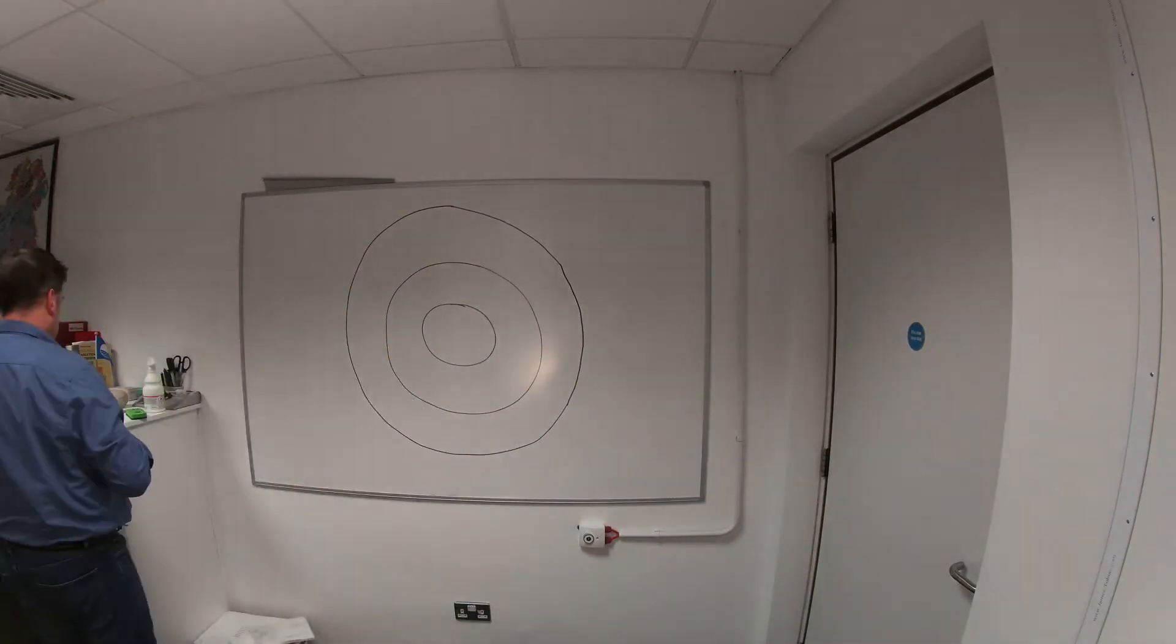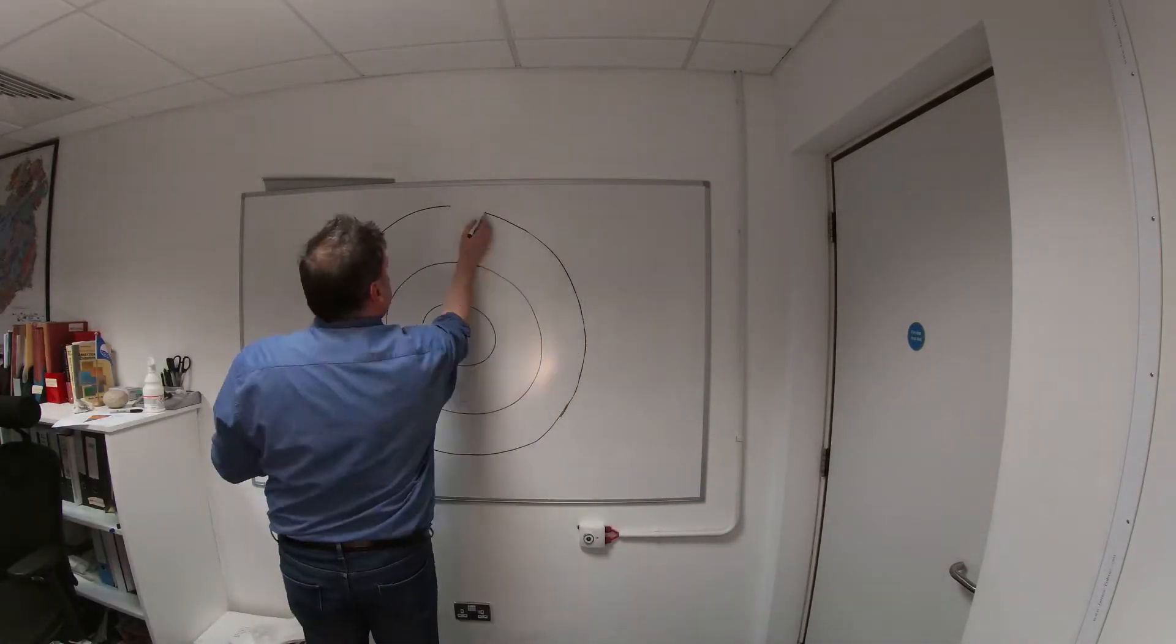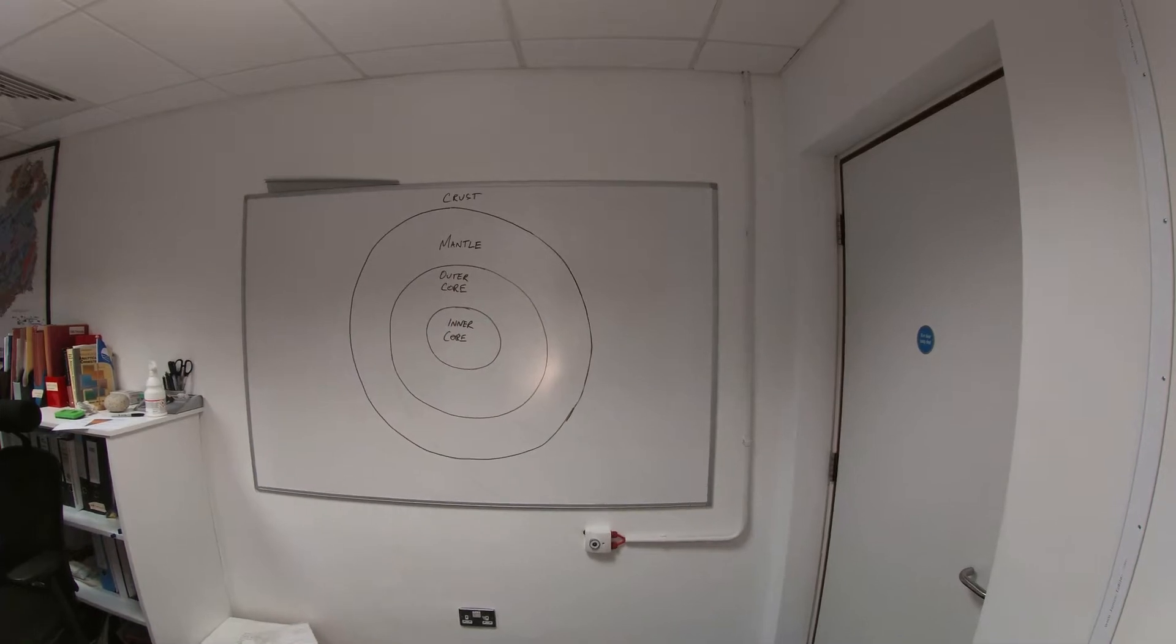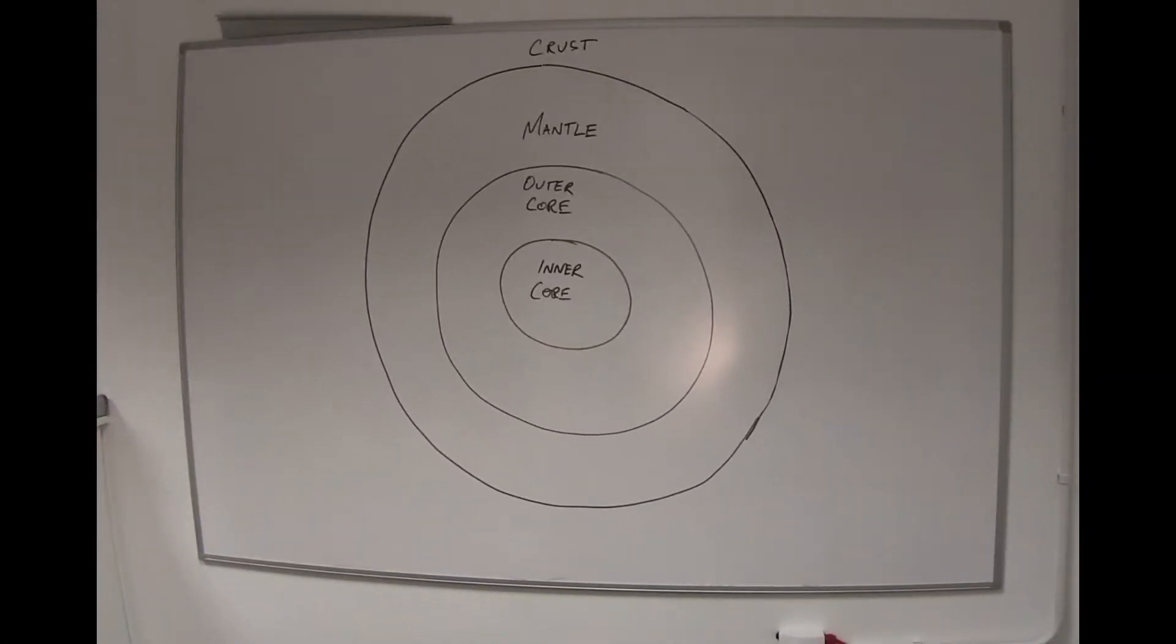And then they'll start to label the various layers. You've got the Earth's crust, which is between 5 to 70 kilometers thick, and the mantle, which is solid and about 2,850 kilometers thick.